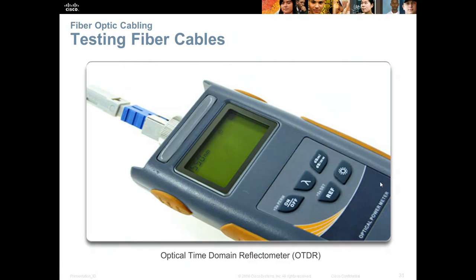To test fiber optic cable, we use an OTDR — an Optical Time Domain Reflectometer. Just as with copper cable, we want to test our fiber optic cable after getting the ends on and after installation in the network.